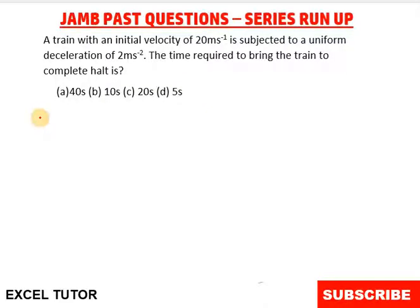Hello everyone, today we are going to be solving a question on motion from the 2016 JAMB past question. Here it says, a train with initial velocity of 20 m per second is subjected to a uniform deceleration of 2 m per second squared. The time required to bring a train to a complete halt is.